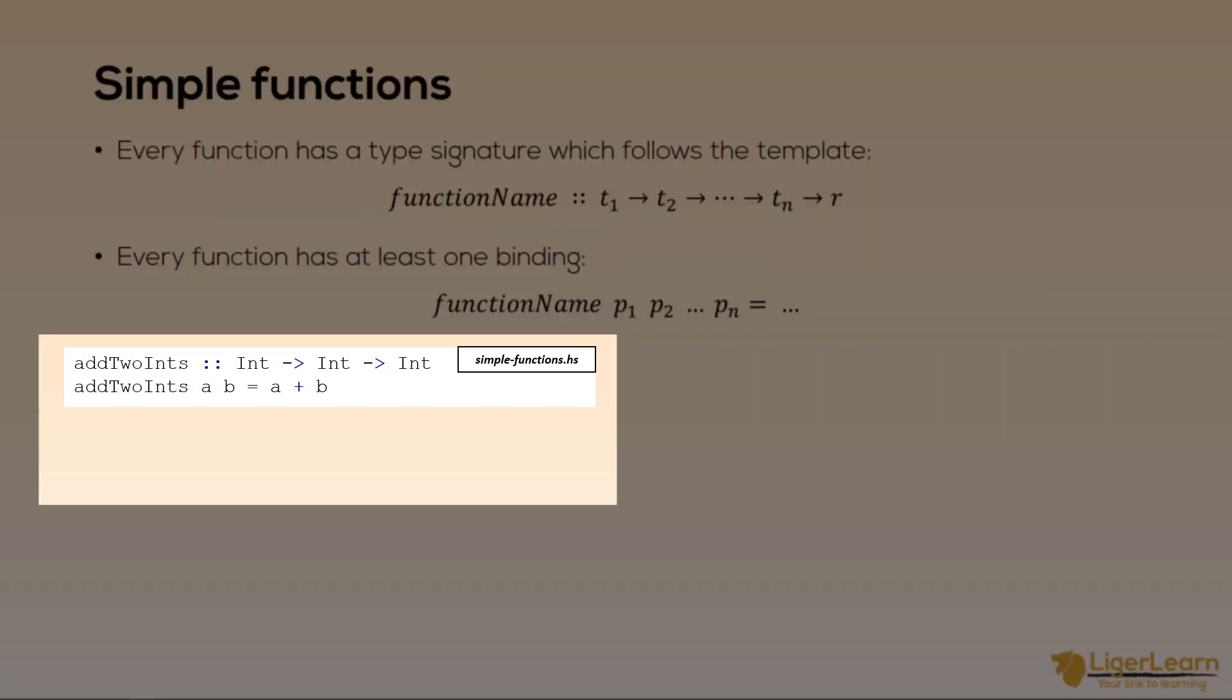There are two parts to the function definition here. The first at the top is the type signature and the second underneath it is the binding. According to the type signature the function takes two ints and returns an int. So we know there are two parameters to the function which we need to name. In the binding we have the function name and the names we want to give to the parameters all separated by a space. The names could be anything but I've just given the names a and b for simplicity. Then the logic in the binding simply uses the inbuilt plus function to add the variables a and b together.